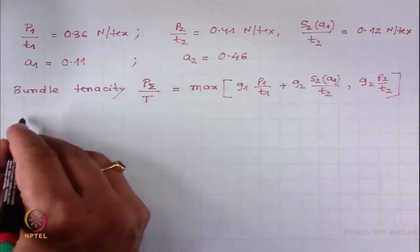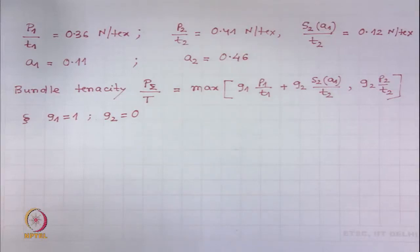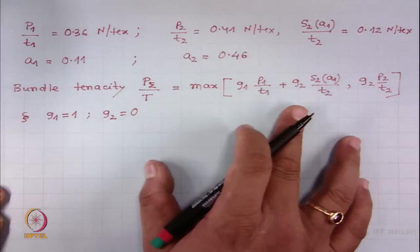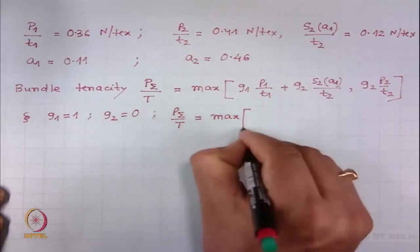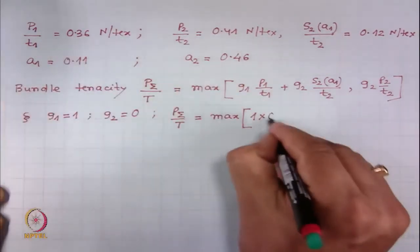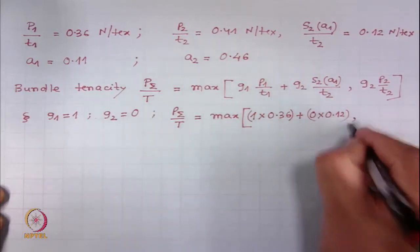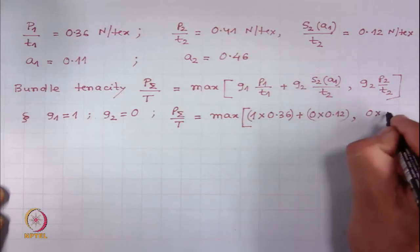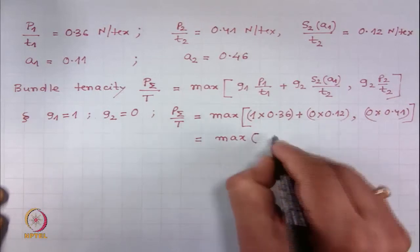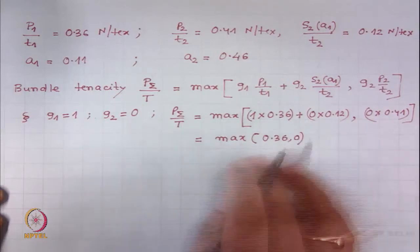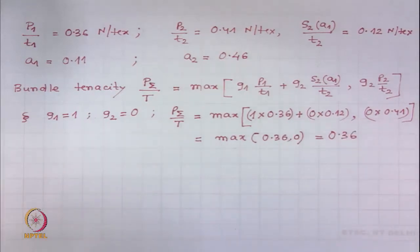Let us first start when g1 = 1, g2 = 0, meaning 100 percent cotton fibre. Substituting all quantities: maximum of [1 × 0.36 + 0 × 0.12] and [0 × 0.41]. This gives maximum of 0.36 and 0. The maximum is 0.36, so bundle tenacity will be 0.36 Newton per tex.